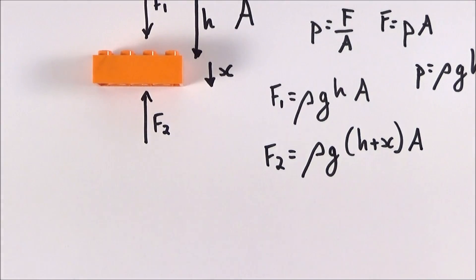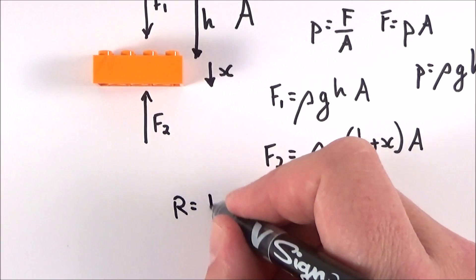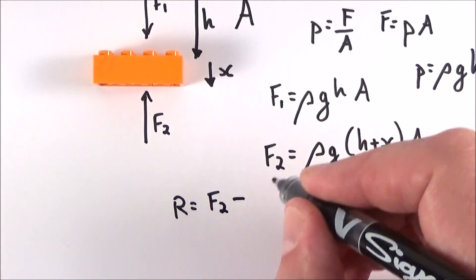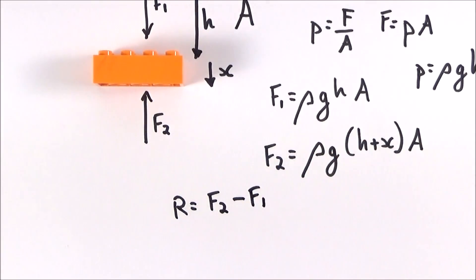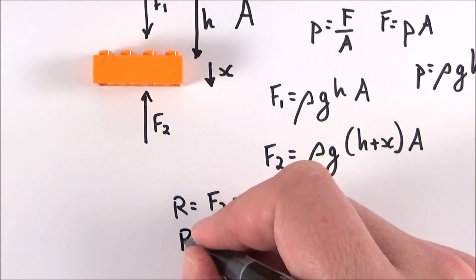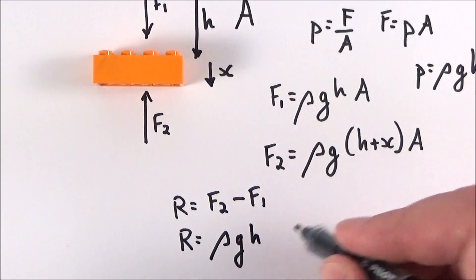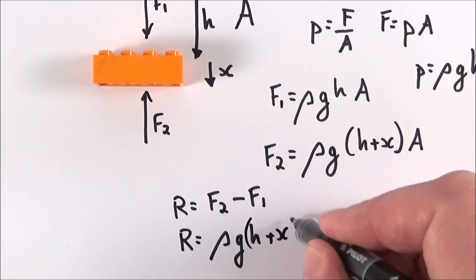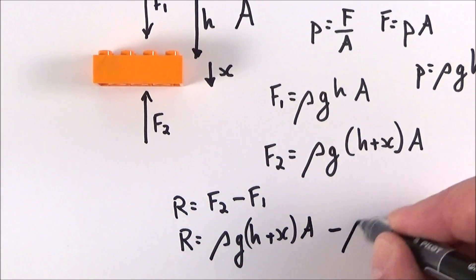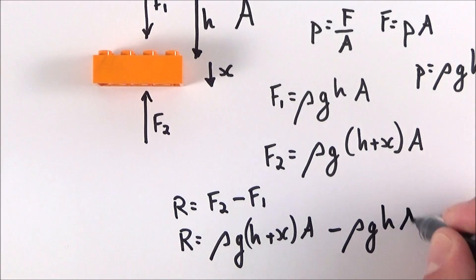Now if we want to look at the resultant force, we can say that the resultant force R is going to be equal to F2 minus F1. Therefore the resultant force upwards is equal to ρg(h+x)A minus ρghA. And what we have then is this term ρghA cancels with this term here.